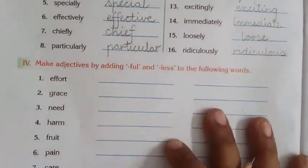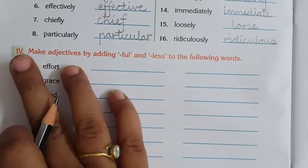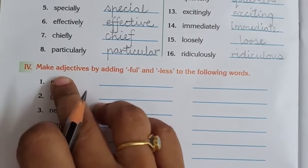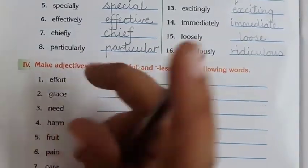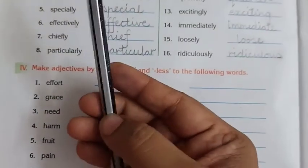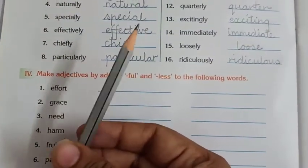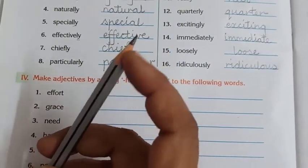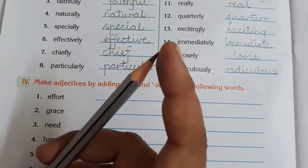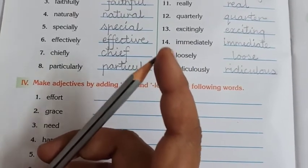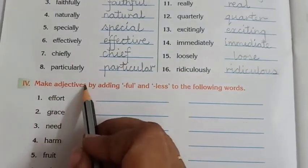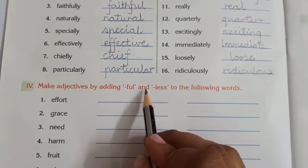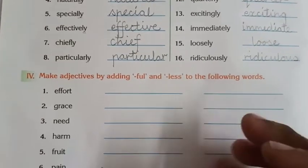Moving on to question number four: make adjectives. What are adjectives? Adjectives are words that describe a noun. For example, 'it's a pencil' is okay, but if I say 'it's a sharp pencil', I have described the pencil more. So adjectives are describing words. We will do this in English grammar by adding '-ful' and '-less' to the following words.